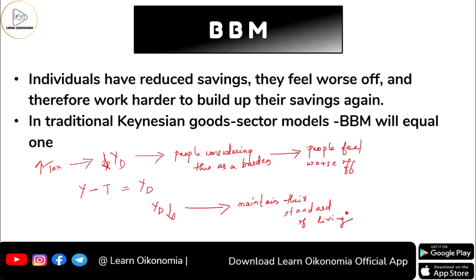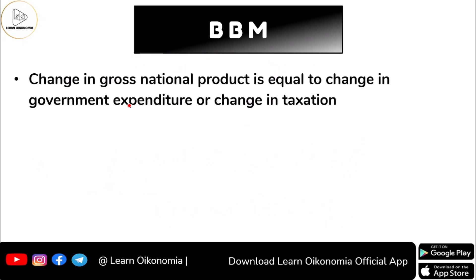In Keynesian theory, the balanced budget multiplier will always be equal to one. As the name suggests, we are dealing with balance — the balance between tax, expenditure, and GNP. We are considering a change in GNP, which is equal to the change in government expenditure.